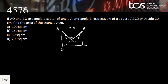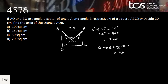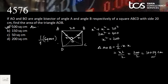Let AO = OB = x. Then x² + x² = 20², so 2x² = 400, giving x² = 200. Area of triangle AOB = ½ × base × height = x²/2 = 200/2 = 100 square centimeters. Alternatively, triangle AOB is one-fourth of the square's area: ¼ × 20² = ¼ × 400 = 100 square centimeters. Either method gives the answer: 100 square centimeters, Option A.